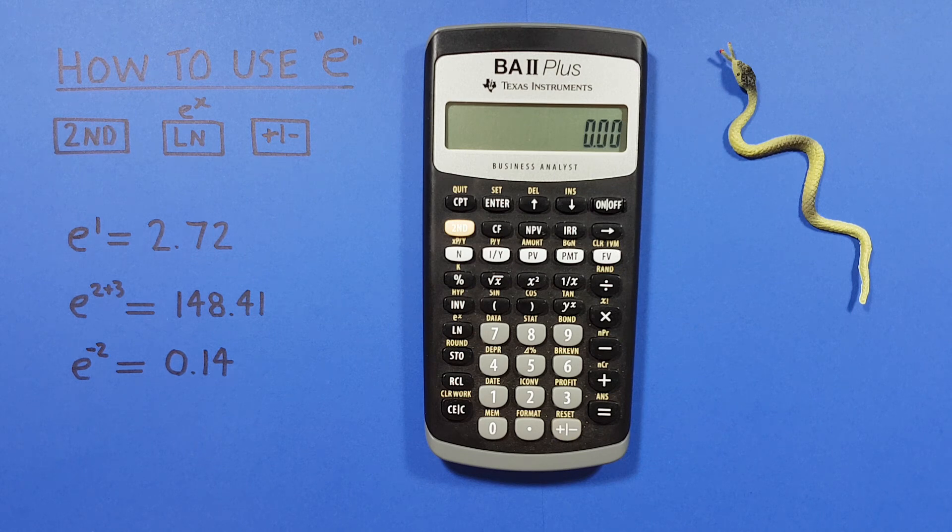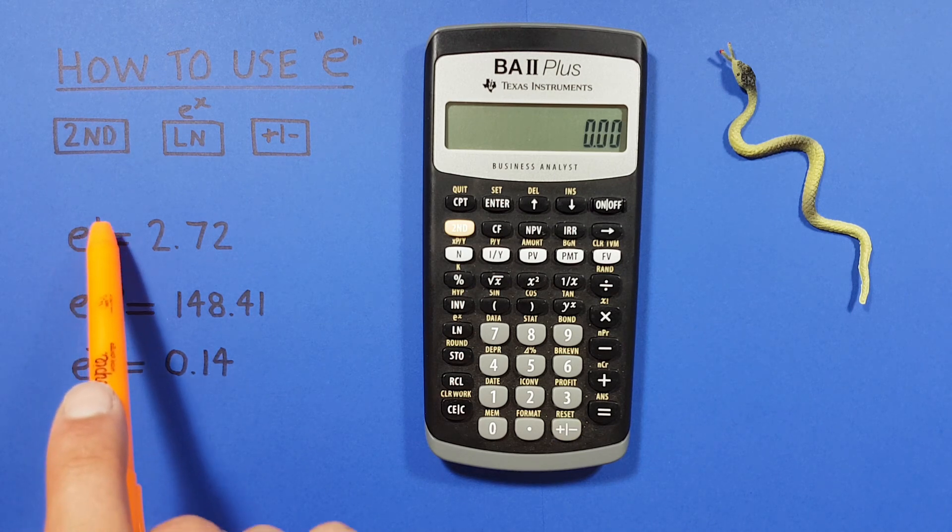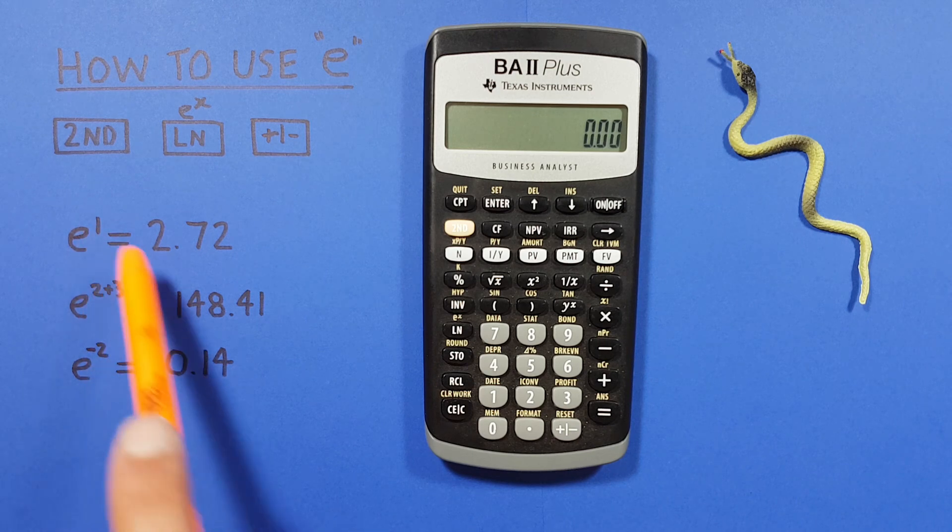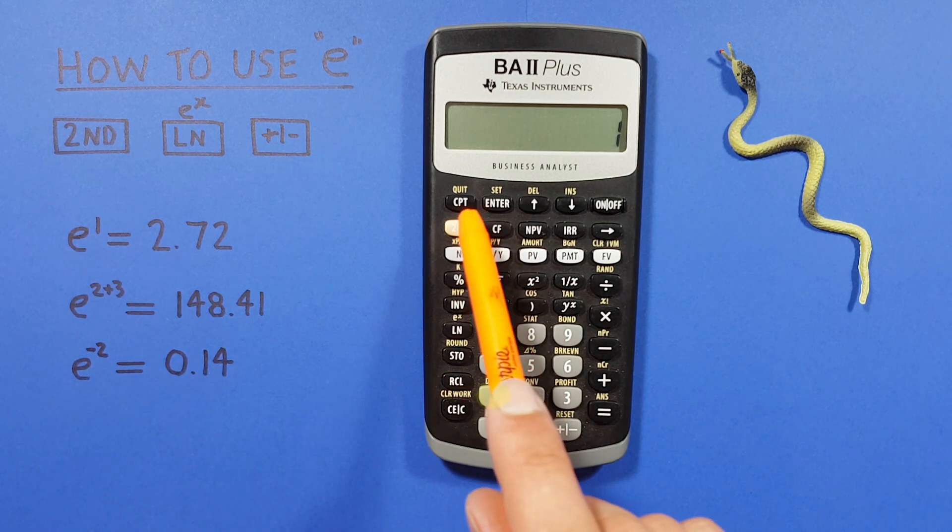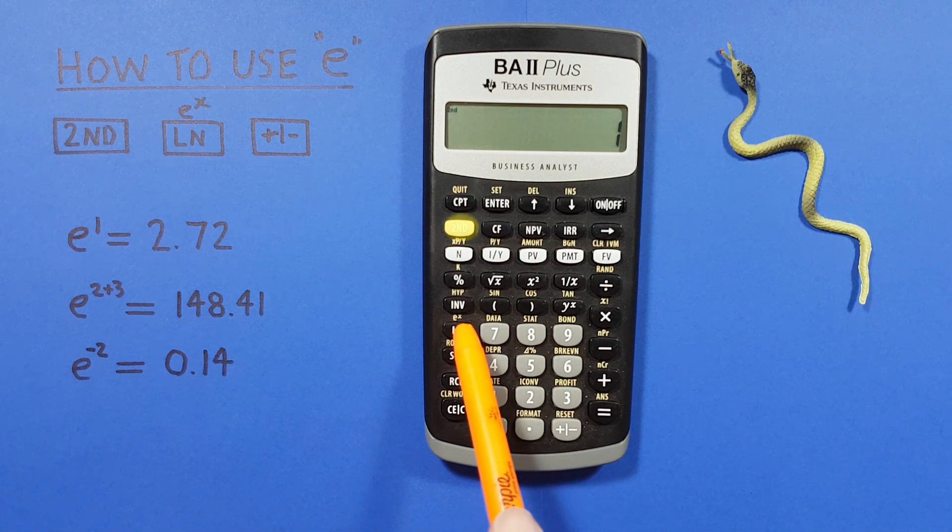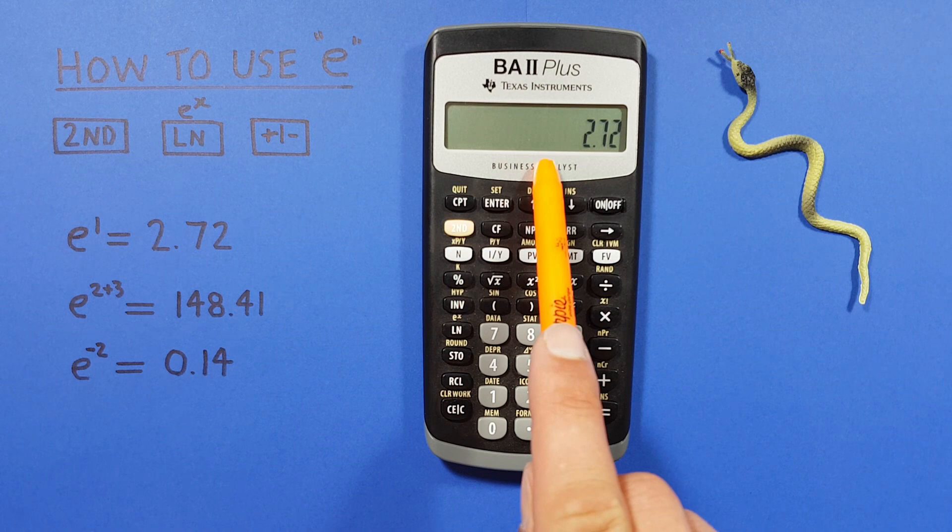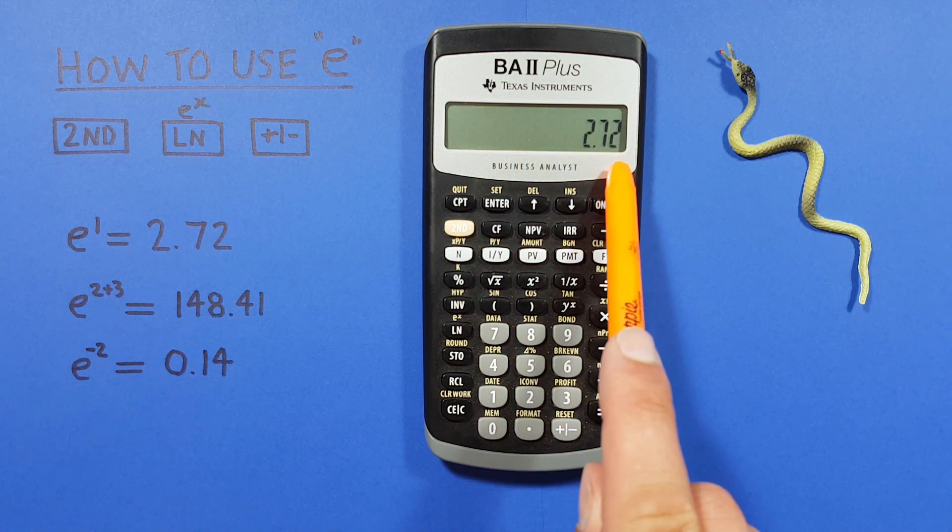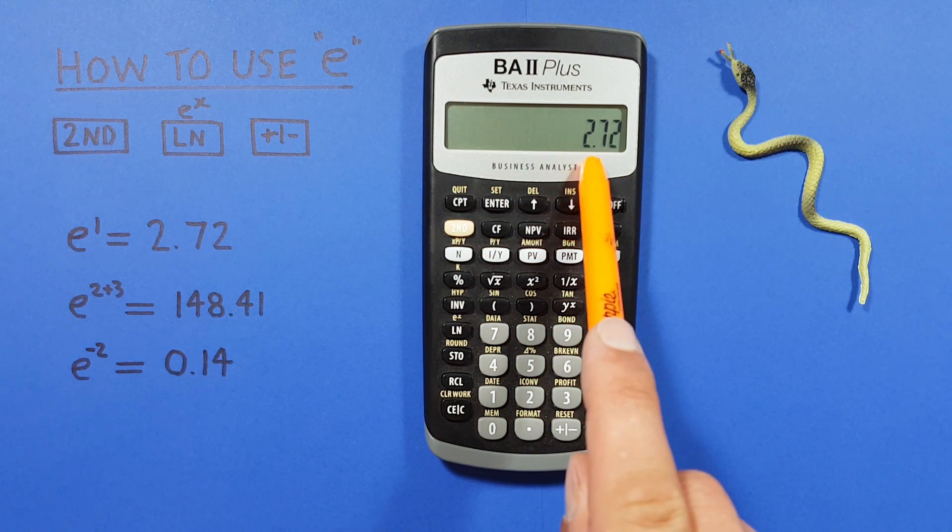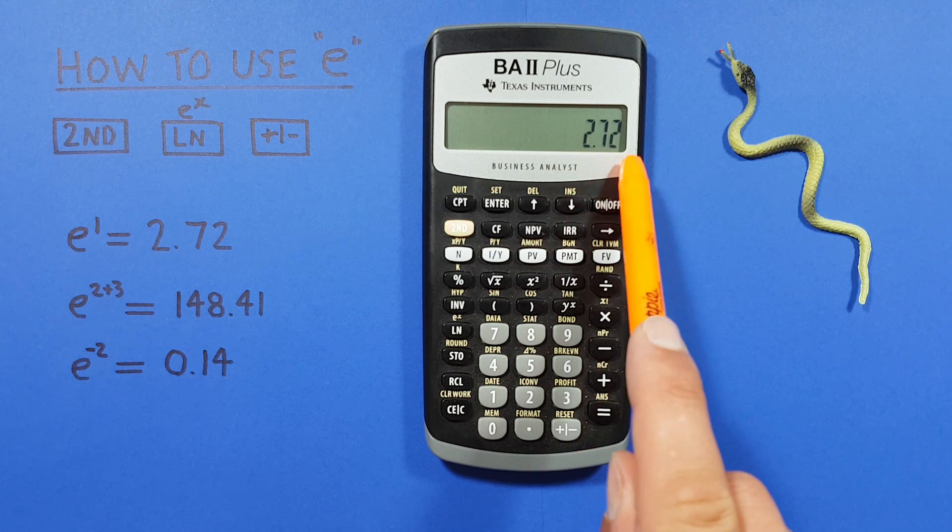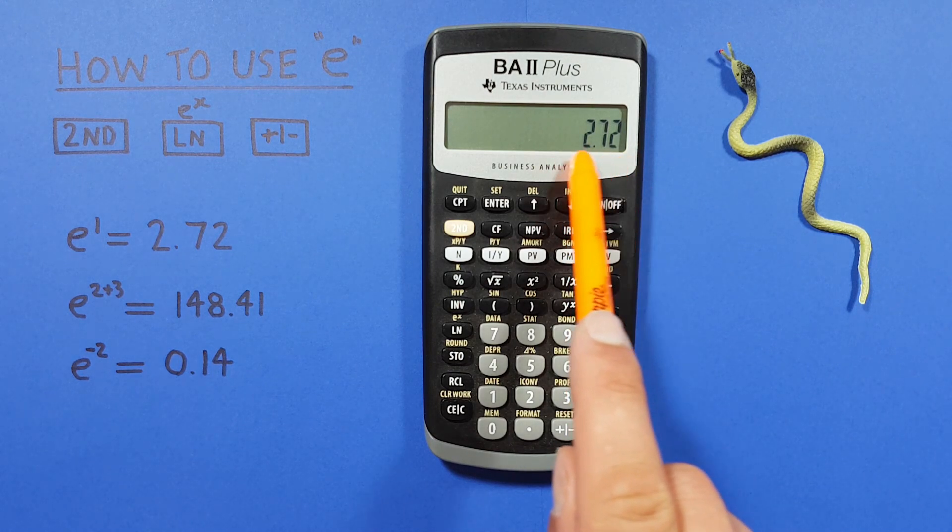To get started, if we just want to do something like e to the power of 1, we enter the 1 exponent on our screen and then press the second function LN key. This gives us a result of 2.72. Keep in mind my calculator is set to round to two decimal places, so this is a rounded result.